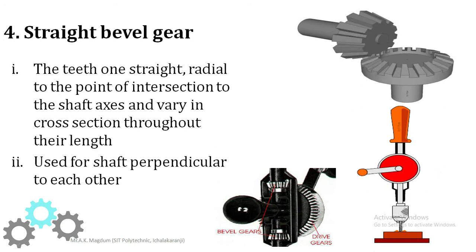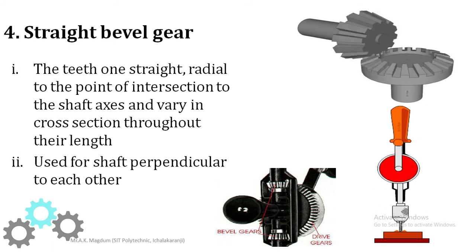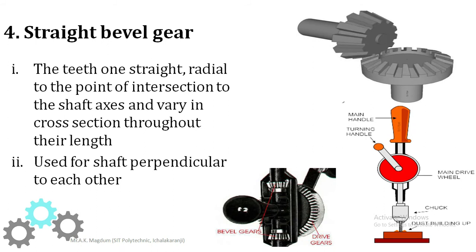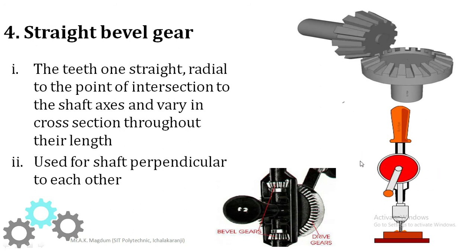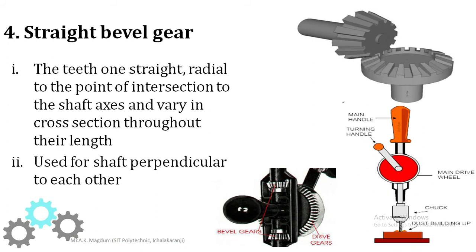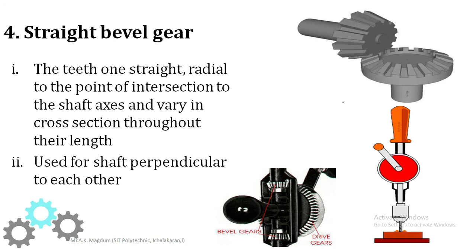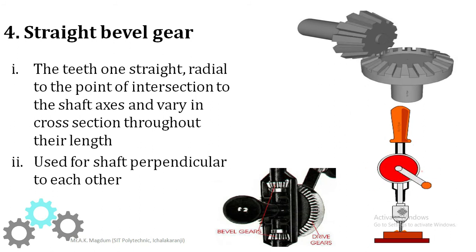The straight bevel gear has teeth that are straight and radial to the point of intersection with the shaft axis, varying in cross-section throughout their length. It is used for shafts perpendicular to each other. A best example is the hand drill machine — motion is given by the main hand wheel drive and then the chuck starts rotating, with the bevel gear converting rotary motion to drive the chuck.